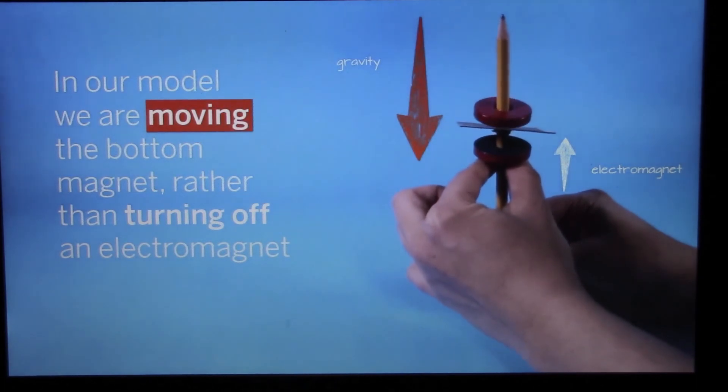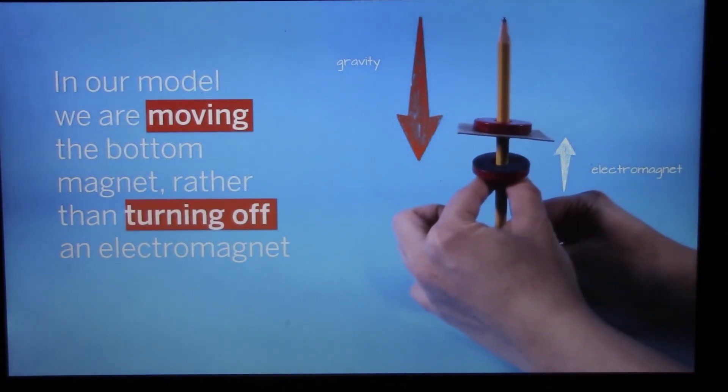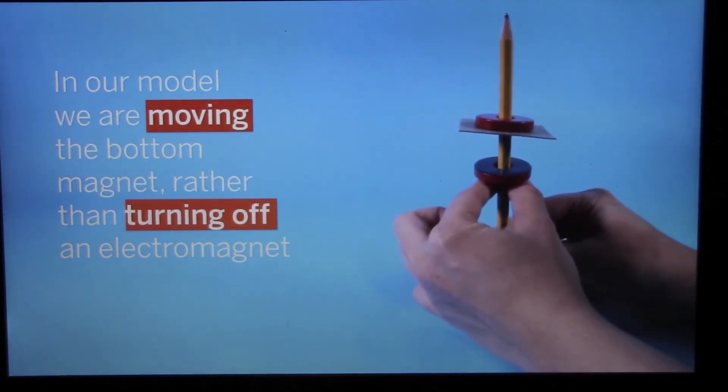In our model, we are moving the bottom magnet rather than turning off an electromagnet. Our model is different from the real train in this way.